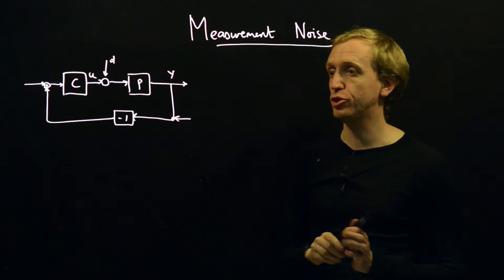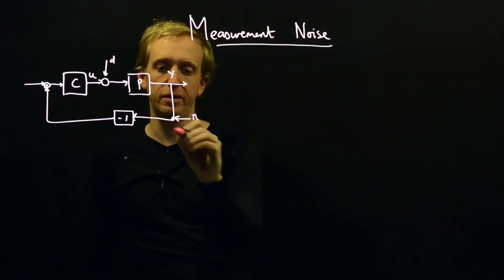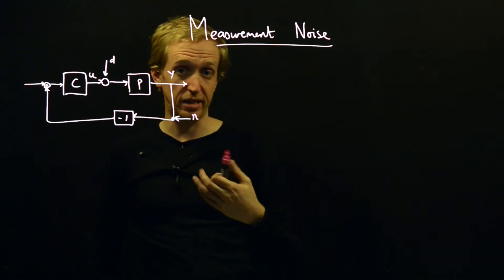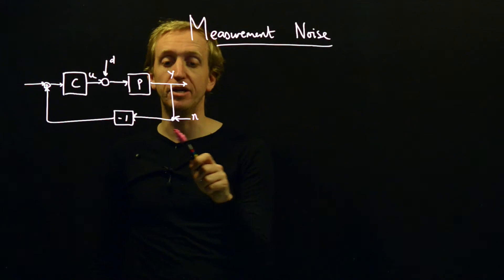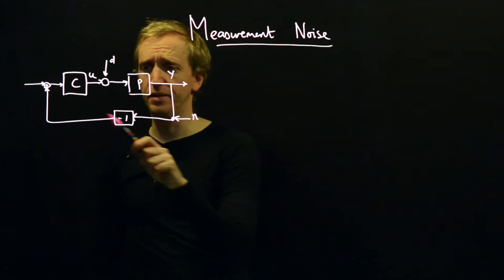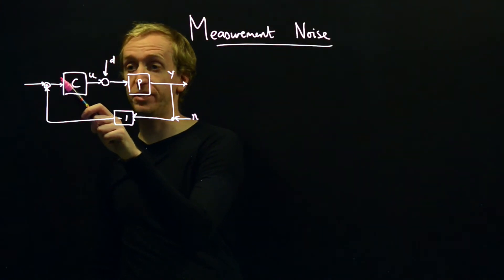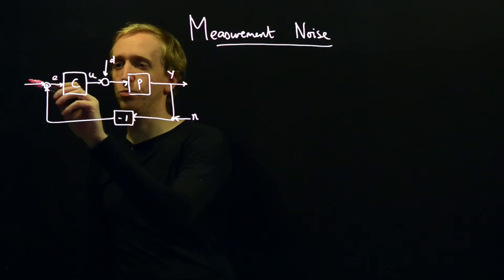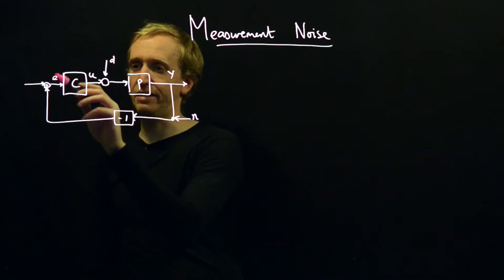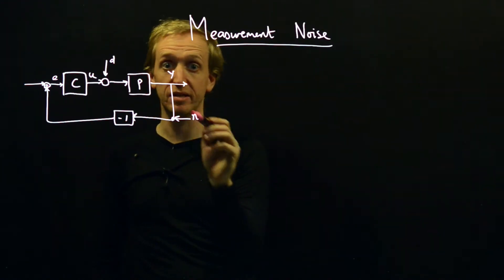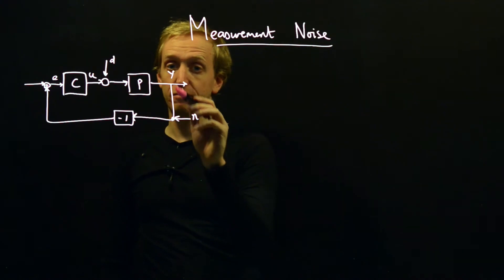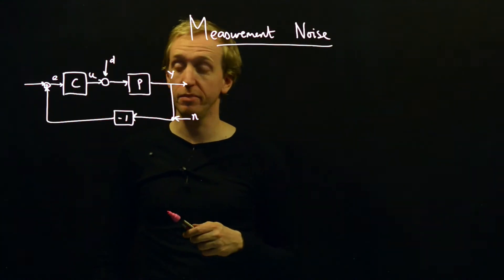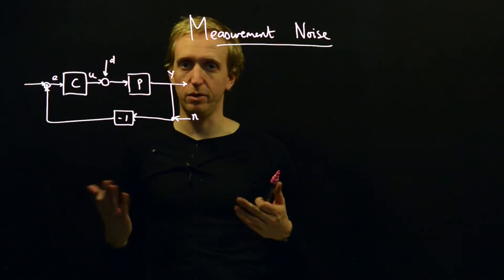Building this into our picture, noise is typically represented by this signal here. We have the output of the process that we're interested in, and we take some measurements of it — and it's that process of taking measurements that introduces noise. When we make our control decision, our controller has access to this error signal, which is the difference between where we think we are and where we want to be. But in this error signal, it's not where we think we are — it's where we think we are plus some noise. If there's a lot of noise, we don't have reliable information about the output, and things are not going to work well.